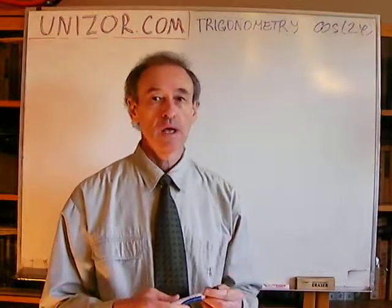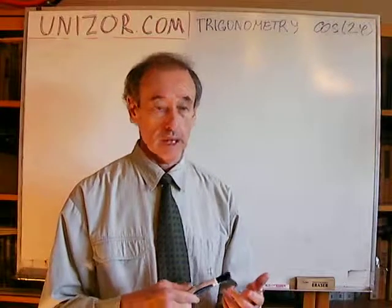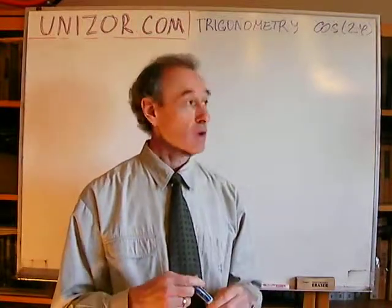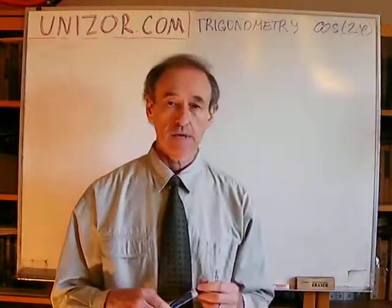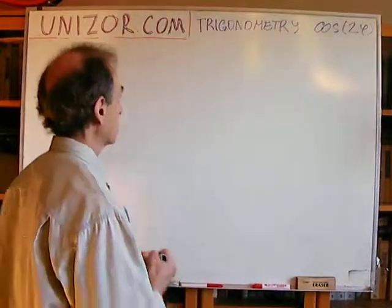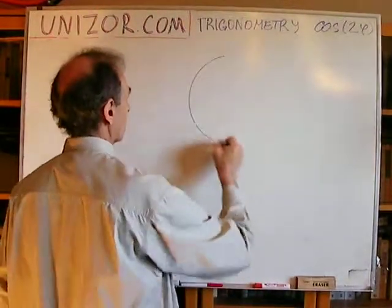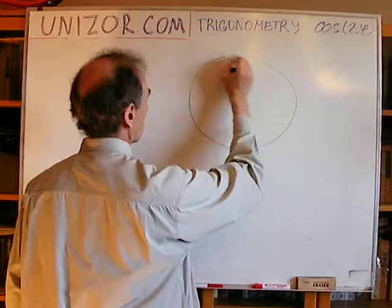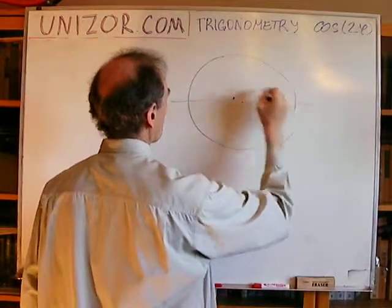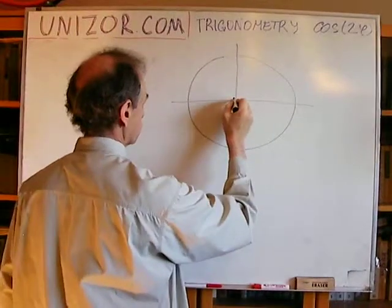What happens with the trigonometric function cosine of this angle if I double the angle? Let's start from a simple picture. I'll derive some formula, and then I will criticize it.